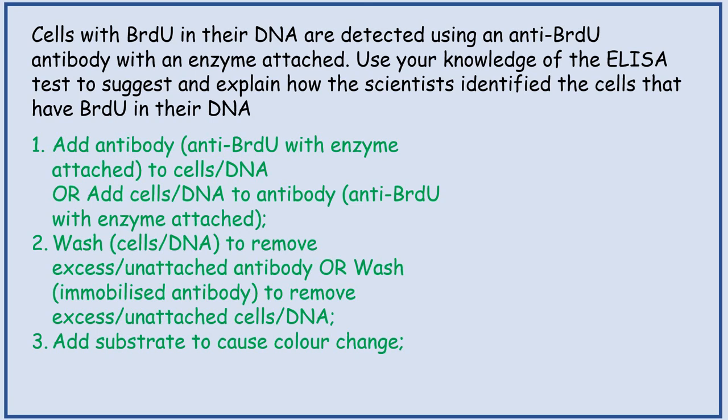Add the antibody — the anti-BrdU with the enzyme attached — to the cells or DNA. Wash the cells to remove any excess or unattached antibody. Then add substrate to cause a colour change.